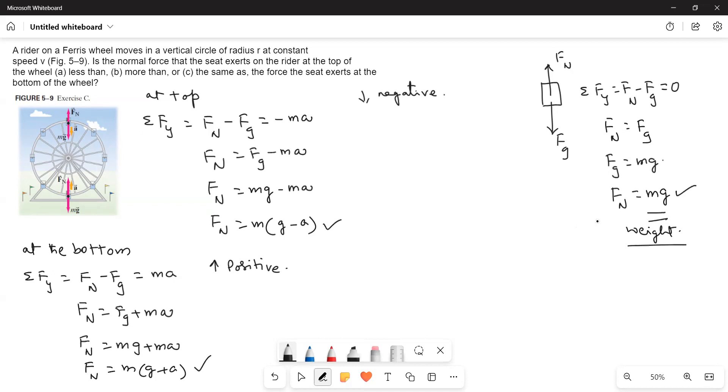So, here it is the regular weight. And then here it is less than the regular weight or regular Fg. Here at the bottom, greater than Fg. Fn is greater than Fg at the bottom. Fn is less than Fg at the top.